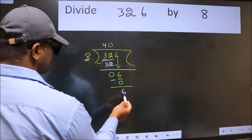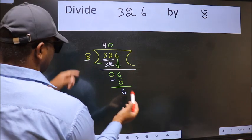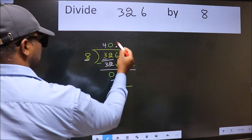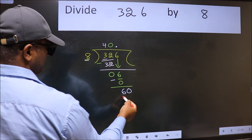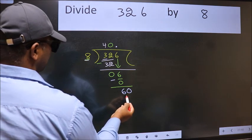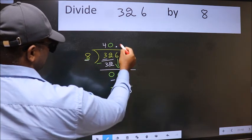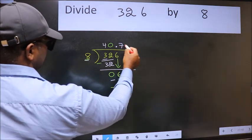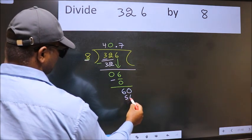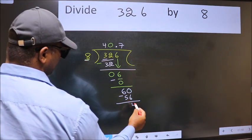And 6 is smaller than 8. So now we can put dot and take 0. So 60 — a number close to 60 in the 8 table is 8 sevens: 56. Now we subtract — we get 4.